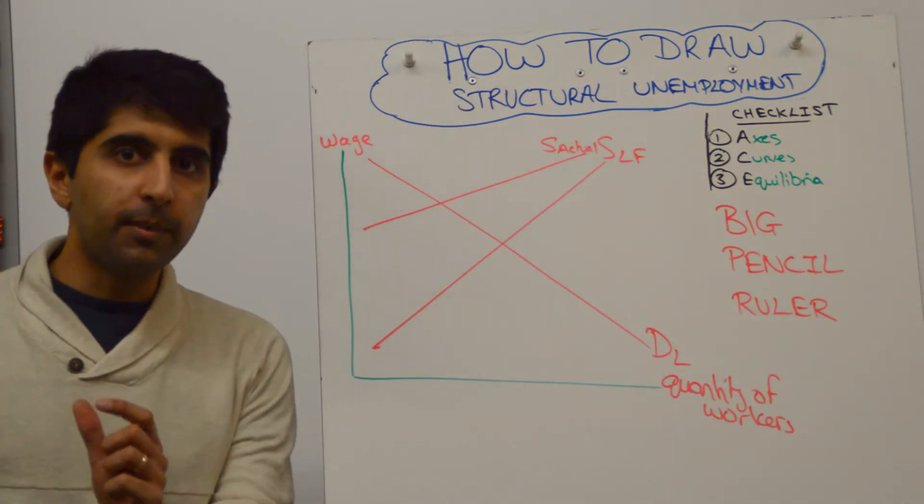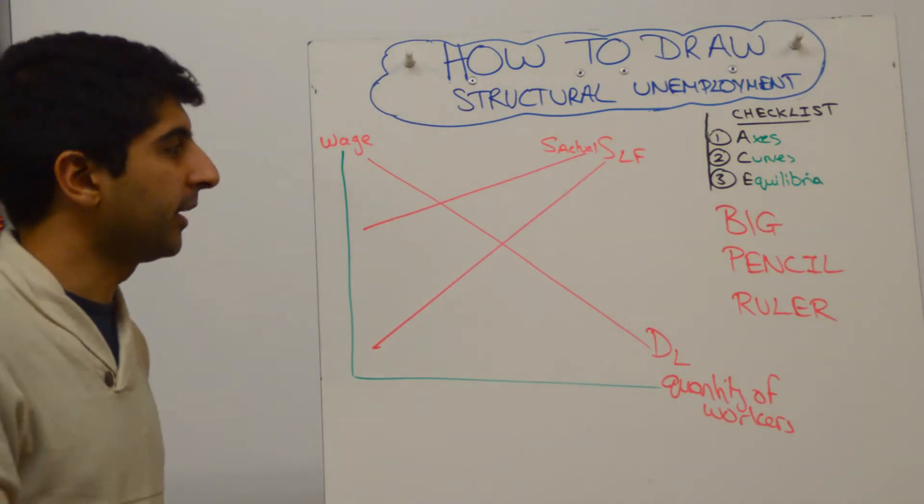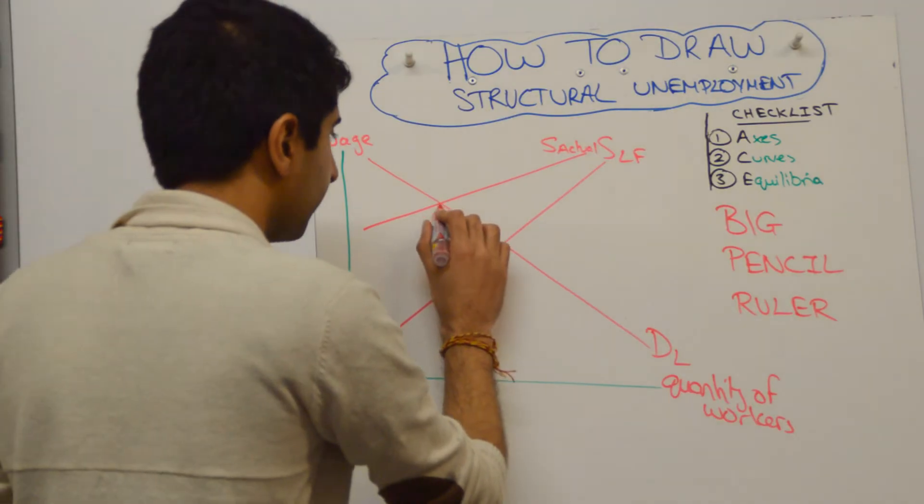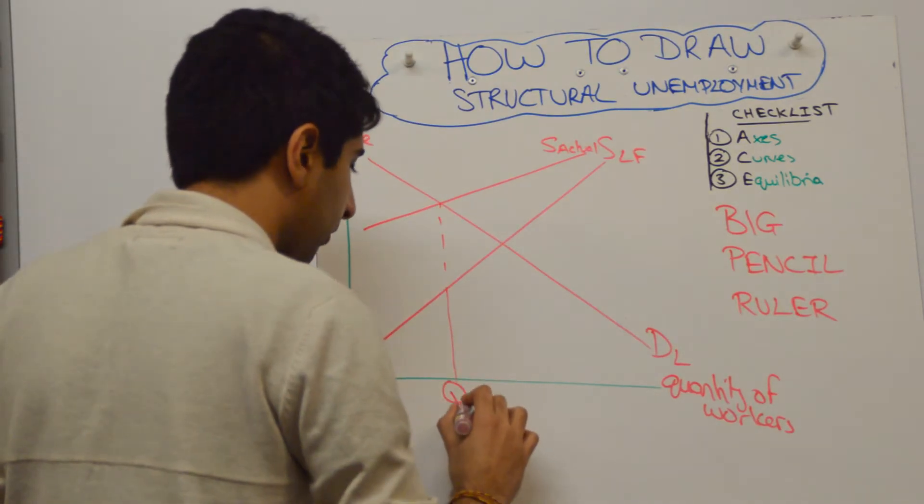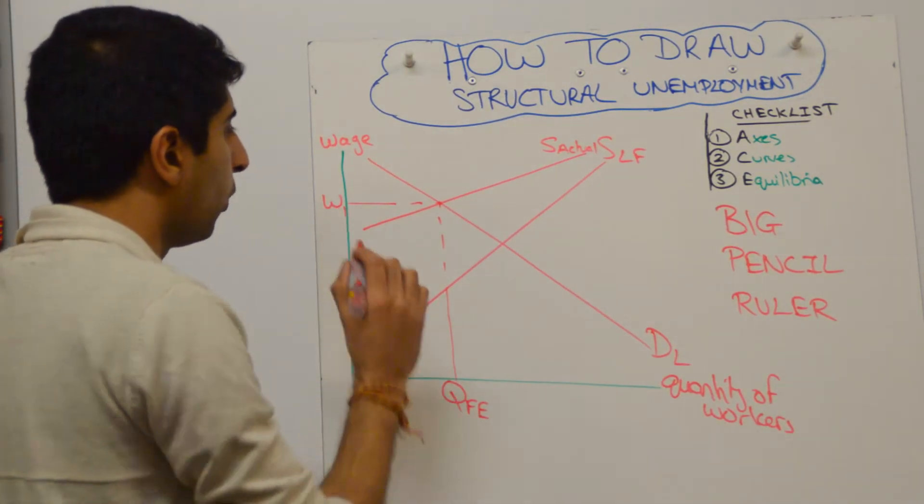Now we need to show our equilibrium. Equilibrium in the labour market is where the actual supply curve cuts the demand curve. So let's draw that. That's going to be our full employment level of output, so let's call that QFE, with a wage rate of W1.